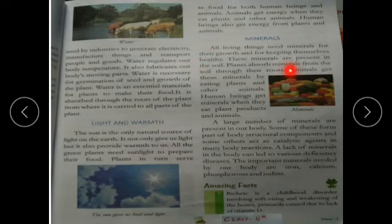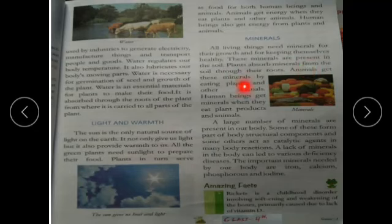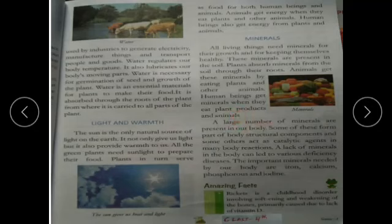First of all, talking about minerals — all living things need minerals for their growth and to keep themselves healthy. These minerals are present in the soil. Plants absorb minerals from the soil through their roots. Animals get these minerals by eating plants and other animals. Human beings get minerals when they eat plant produce and animals.